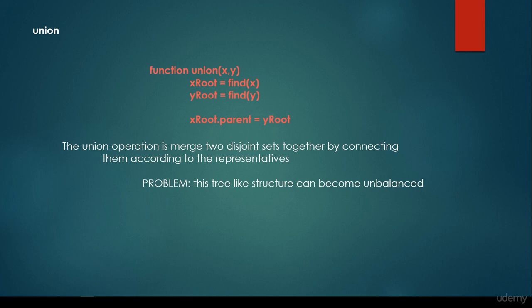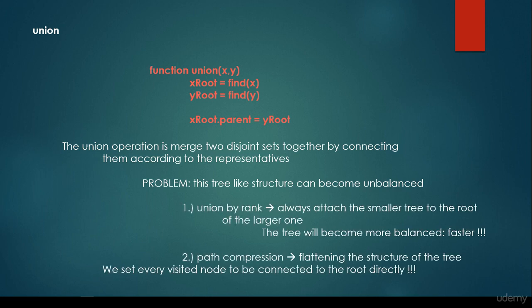Several problems arise. For example, this tree-like structure can become unbalanced. Just as binary search trees can get unbalanced — which is why AVL trees and red-black trees came to be — the same issue applies here. We come to the conclusion that this tree-like structure can become unbalanced. One solution is union by rank: we always attach the smaller tree to the root of the larger tree, so the tree will become more balanced and operations like find will be faster.